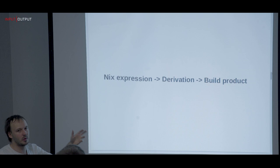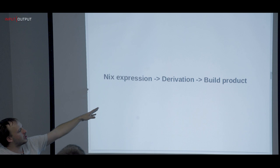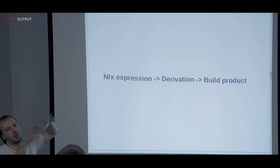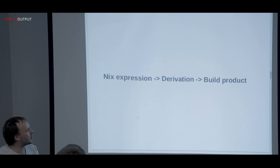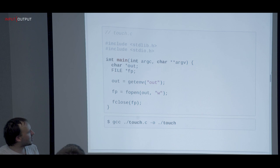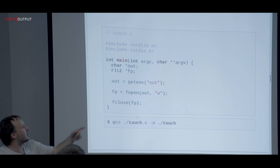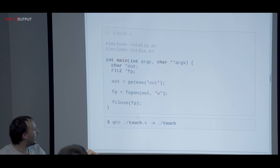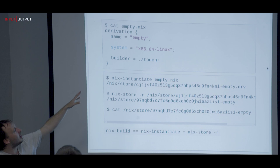Derivations are an intermediate representation of fully evaluated Nix expressions. For a very simple C program — one that gets an environment variable and creates a file — this would be our most simple derivation. It requires three fields: name, what system it's going to build on, and what the builder is. The builder is an executable that creates the output path — that's the minimum it has to do.